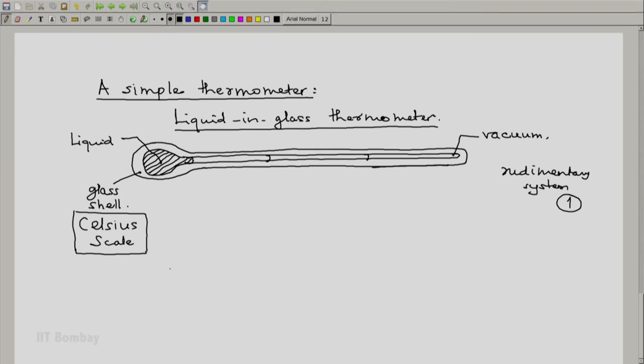What is done is we decide on two reference points, which are known as fixed points. One is the ice point in which we have a system of ice and water at one atmospheric pressure, a system containing ice and water in equilibrium. This is known as the standard ice point.